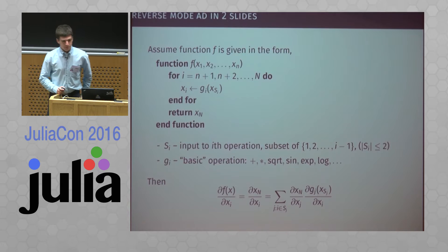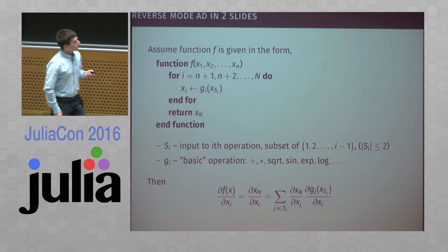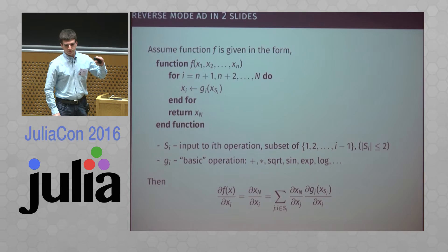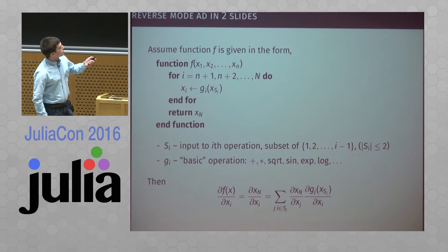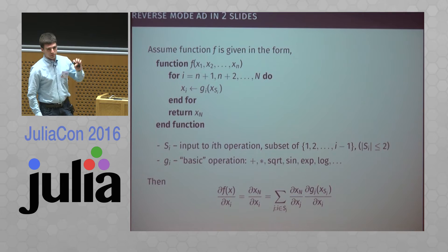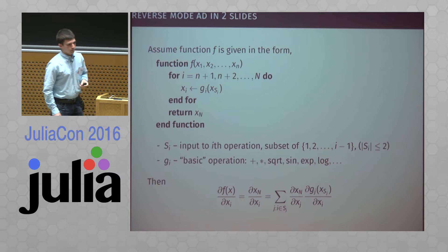Let me try to cover reverse mode in two slides. The key insight is that functions are not black boxes — we're going to think of functions as a sequence of instructions that the computer runs. You write down your function F, which takes some vector x1 to xn, and then it implements a predefined sequence of basic operations — addition, multiplication, square root, sine, exponent — just very basic algebraic operations. This is a single-assignment form, so each xi is assigned once, and these xi's represent all the intermediate values computed in your function.